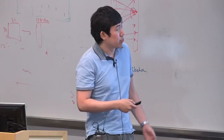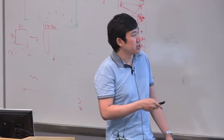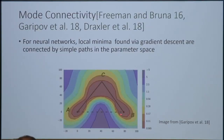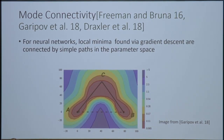The surprising phenomenon found in these papers is that you can connect these two by finding a third intermediate point C, such that if you go from A to C and then from C to B, the loss is low throughout the entire path. This projection is because we have three points — I project to the affine span of these three points. That's where this picture came from.